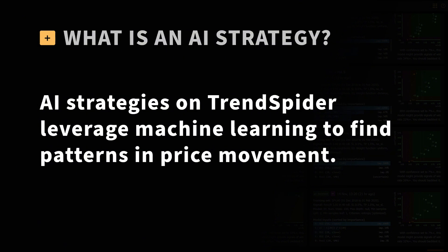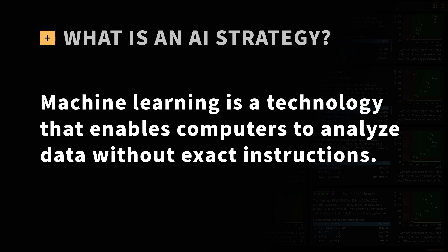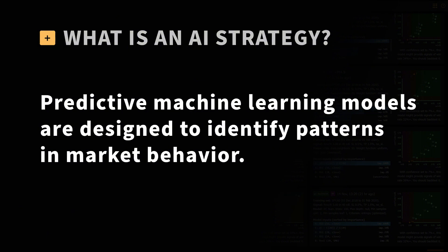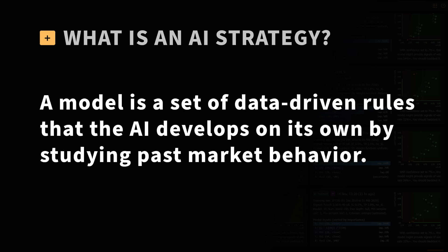What is an AI Strategy? AI strategies on TrendSpider are all about leveraging predictive machine learning to find patterns in price movement. Machine learning, at its core, is a technology that enables computers to analyze data patterns without needing exact instructions. With TrendSpider's AI strategies, you'll be working with predictive machine learning models — tools designed to analyze data and identify patterns in market behavior. A model, in simple terms, is a set of data-driven rules that the AI develops on its own by studying past market behavior.